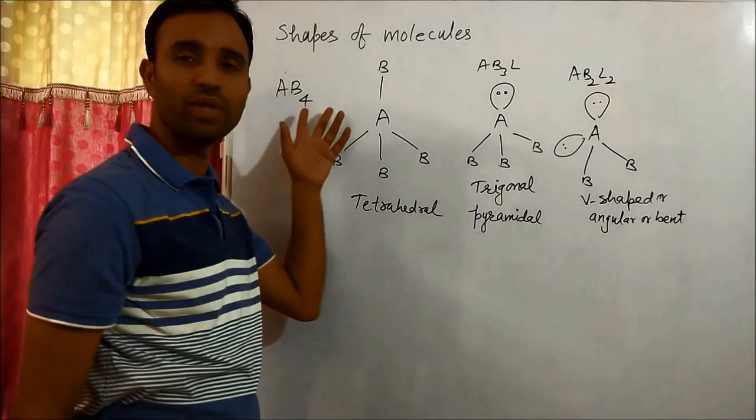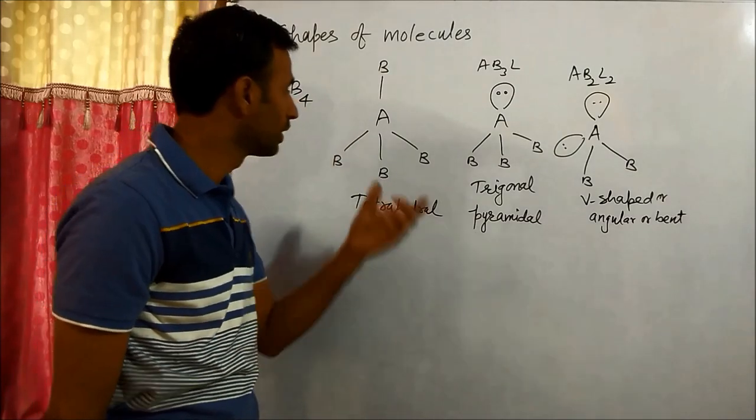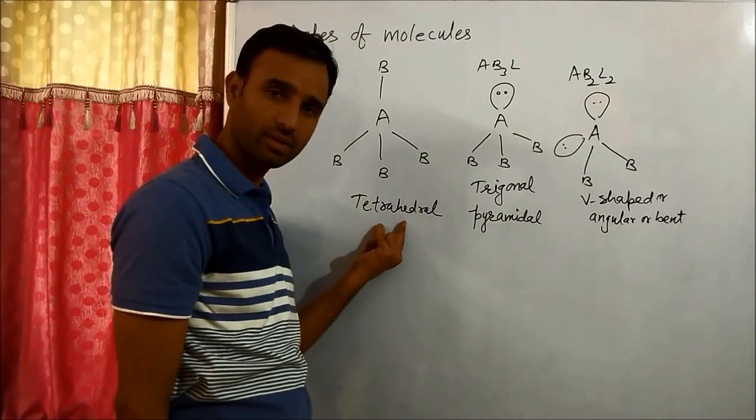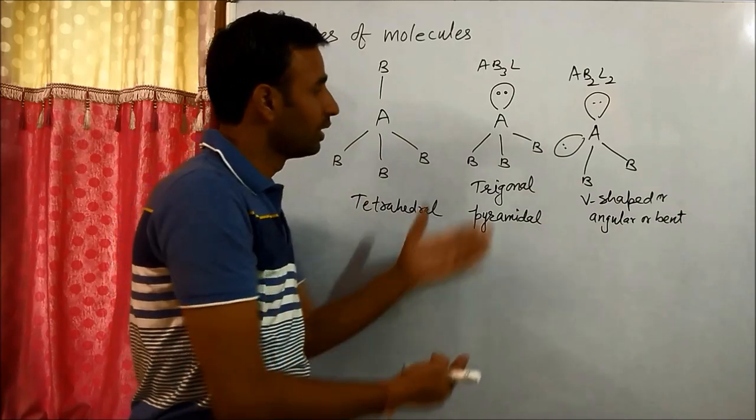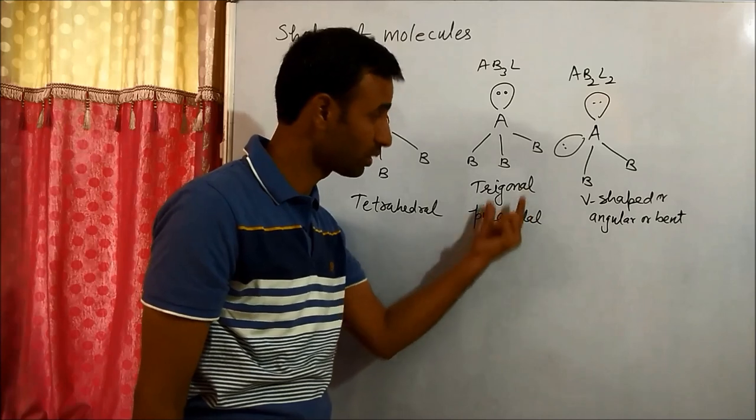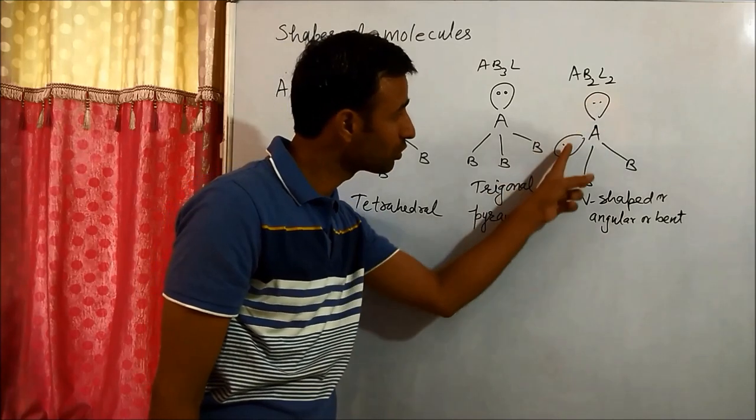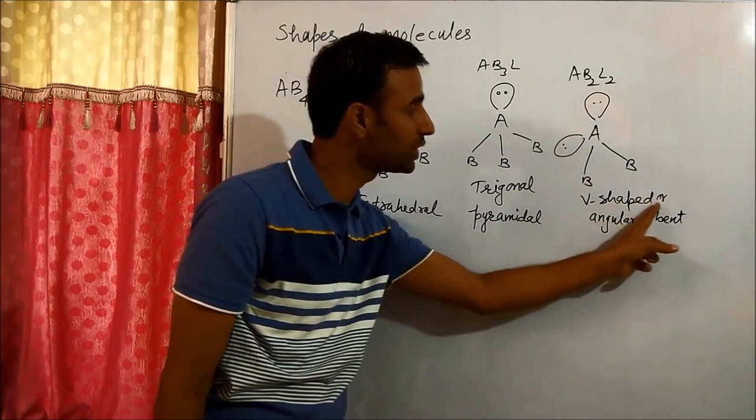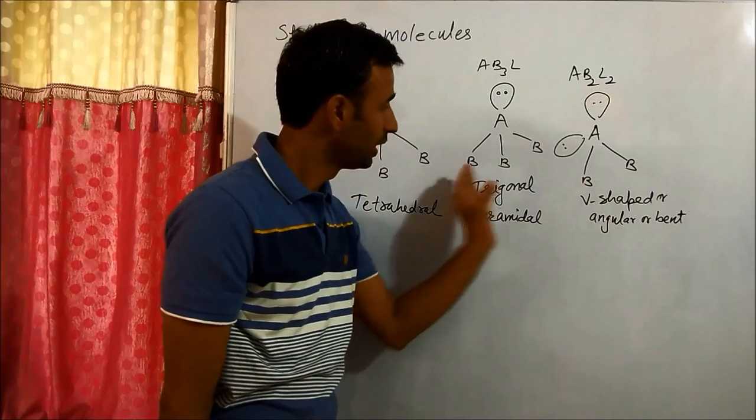So in this way, when we have four pairs, the shape is tetrahedral - that is the regular geometry. If we have one lone pair, the shape is pyramidal or triangular pyramidal. If we have two lone pairs, the shape becomes V-shaped, angular, or bent.